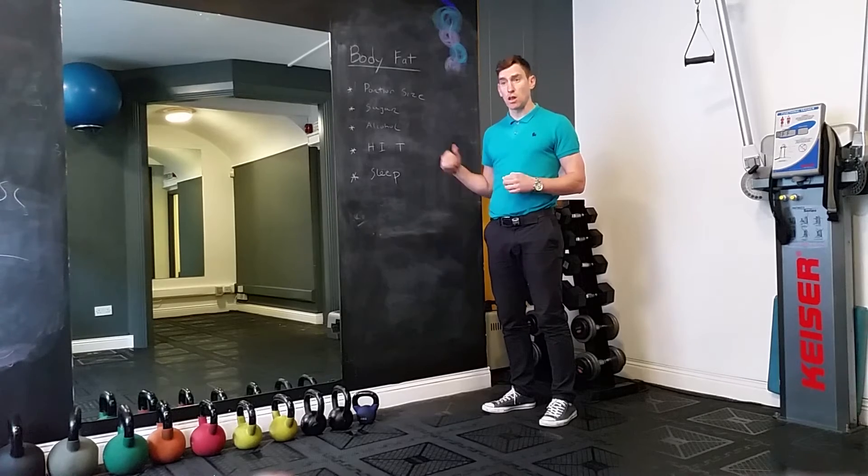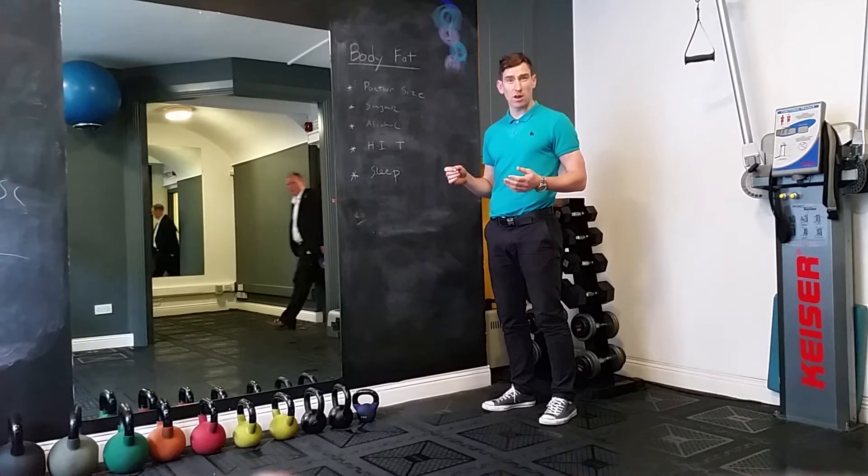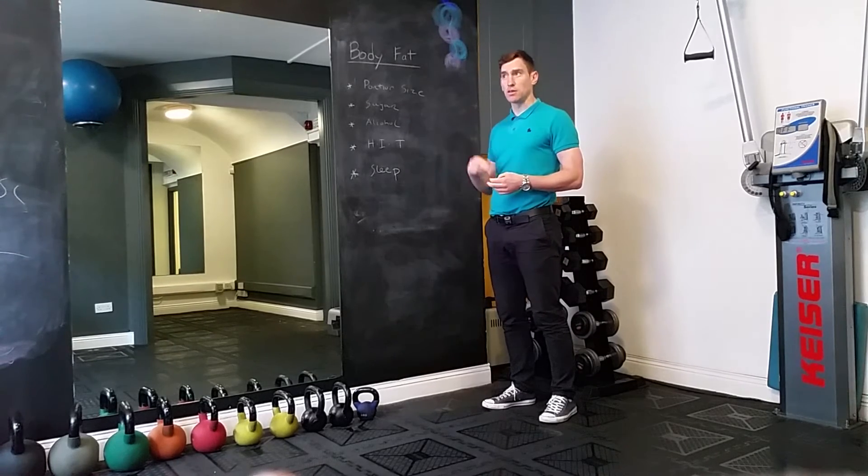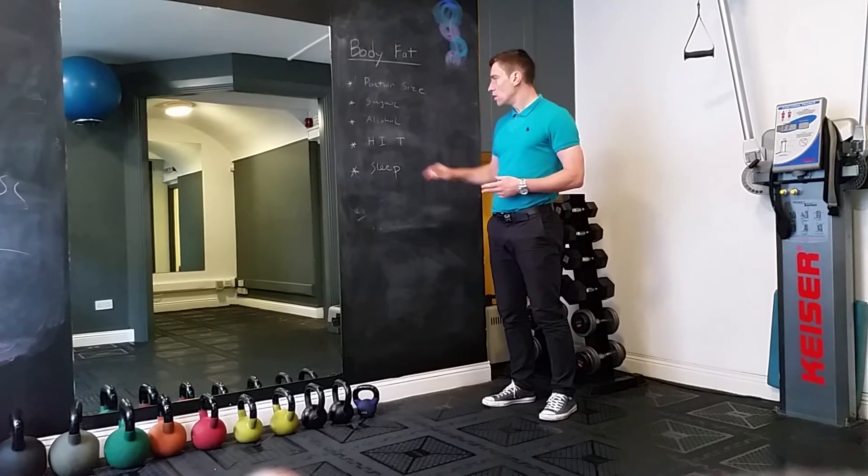Alcohol—there's lots of hidden calories in alcohol. It's about 500 calories in a pint. And then what goes with the alcohol is the bad eating the next day.